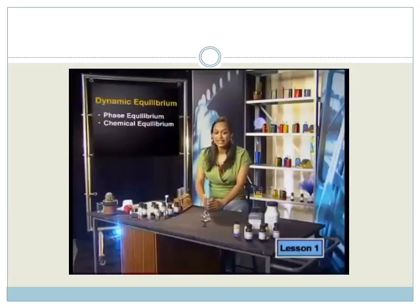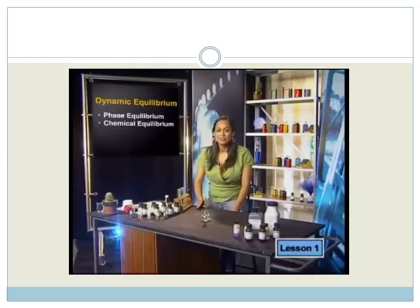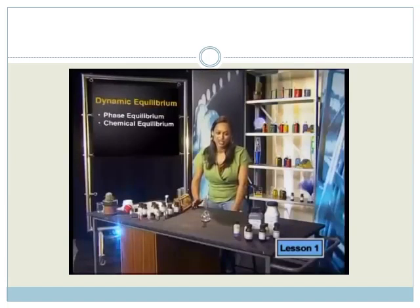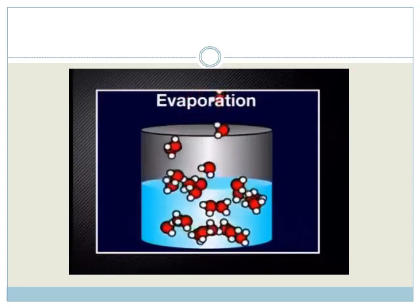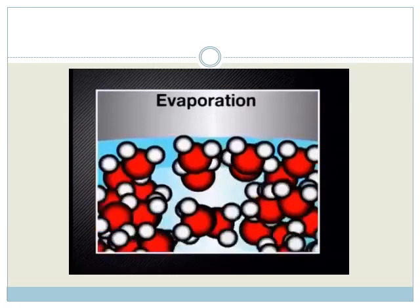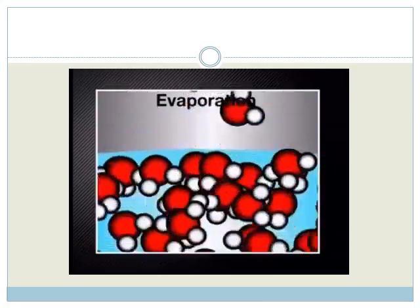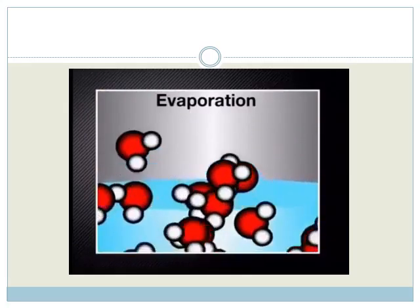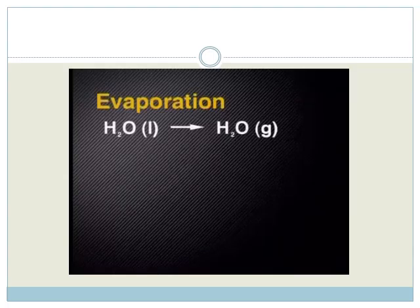To help you form a better picture of phase equilibrium, let's take a closer look at what happens to water placed into a container. From a macroscopic view, nothing seems to be happening. But from a microscopic view, it's a completely different picture. Molecules of water are leaving the liquid and moving into the air — this process is called evaporation. Only those molecules with enough energy can break free of the surface. We can represent evaporation by writing the equation: H2O liquid goes to H2O gas.